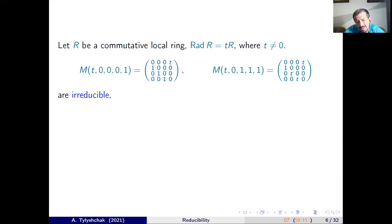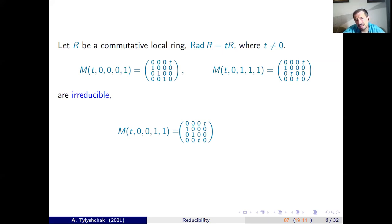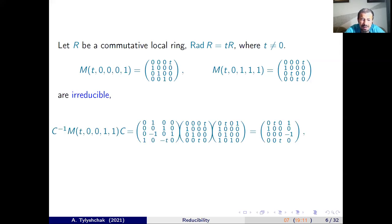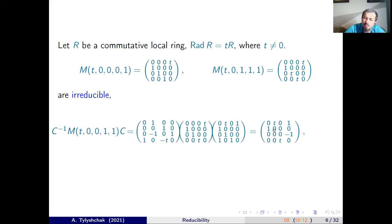Then we consider the matrix with two elements T and try to understand whether this matrix is irreducible. It turns out it is not irreducible — it is reducible. We found a matrix C such that the conjugation gives a reducible block form, where on the diagonal we have 2×2 matrix blocks.